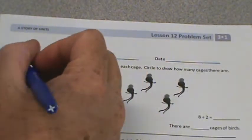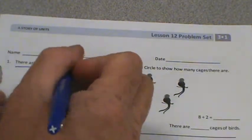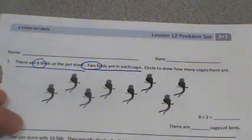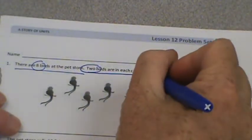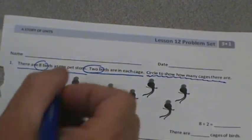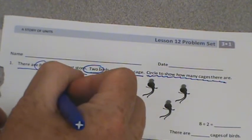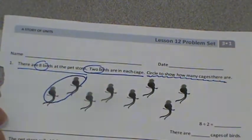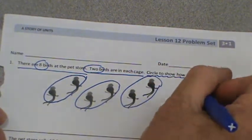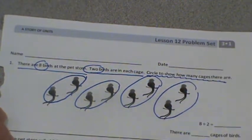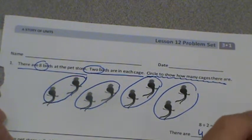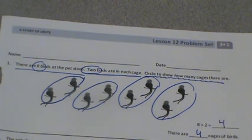There are eight birds at the pet store. Two birds are in each cage. I'm going to circle two to show how many cages there are. If there's two in each cage, let's circle them two at a time: one cage, two cage, three cage, four cage. So eight divided by two equals four — there are four cages.